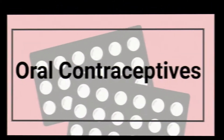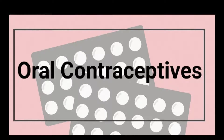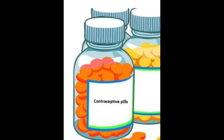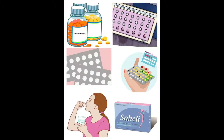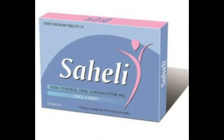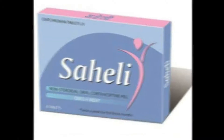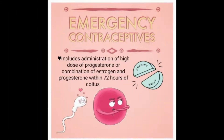Moving to the fourth method: oral contraceptives. These are hormonal preparations in the form of pills. Types include combined pills such as Mala D and Mala N, mini pills such as ERIN and NORA-BE, once-a-week pills, and the most important one — Saheli — which is an oral contraceptive pill developed by scientists at the Central Drug Research Institute in Lucknow. Saheli has high contraceptive value and very few side effects. One of the most important pills is the emergency contraceptive, which is also an oral contraceptive.